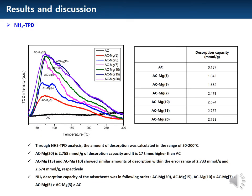During NH3 TPD analysis, the amount of desorption was calculated at 30 to 200 degrees. ACMG20 has a desorption capacity of 2.758 mmol per gram, which is 17 times higher than AC. ACMG15 and ACMG10 showed similar amounts of desorption within the error range, at 2.733 mmol per gram and 2.674 mmol per gram respectively. Ammonia desorption capacity of the adsorbents was in the following order: ACMG20, ACMG15, ACMG10, ACMG7, ACMG5, ACMG3, AC.